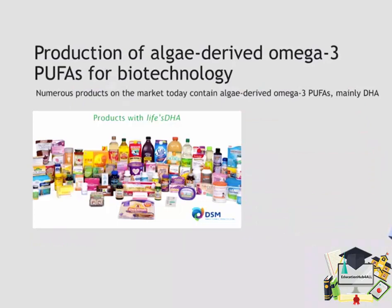If you go to the supermarket today, you will probably have seen that there are many algae-derived omega-3 PUFA products in the public marketplace. Specifically, companies such as Royal DSM, a Dutch multinational, have produced a variety of products ranging from milk, to eggs, to juices, to infant formula, to tortillas, that are enriched in microalgae-derived DHA — docosahexaenoic acid — a 22-carbon, 6-double-bond long-chain omega-3 PUFA.